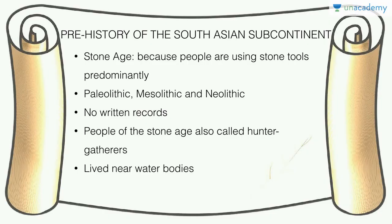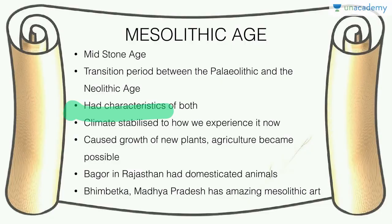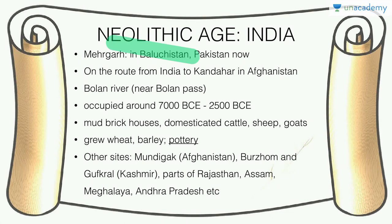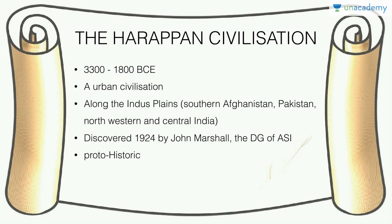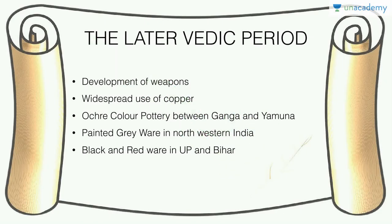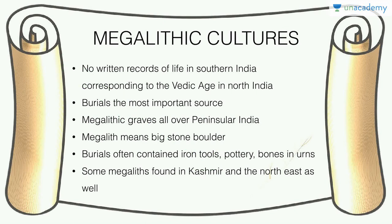Quick recap: we studied prehistory of the South Asian subcontinent, including the Paleolithic, Mesolithic, and Neolithic stone ages, with no written records. Agriculture started in the Neolithic age, with the most important Indian site at Mehrgarh, Baluchistan. We then covered the Harappan Civilization, discovered by John Marshall in 1924 — an urban civilization. After its decline came hunter-gatherers and tribal societies, followed by the later Vedic period with the composition of the Vedas, development of weapons and copper use. We also touched on Southern India's megalithic cultures.